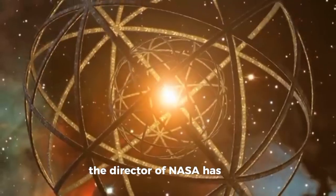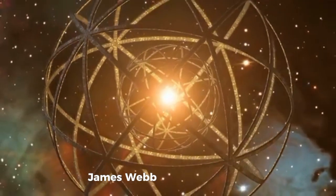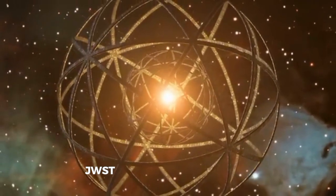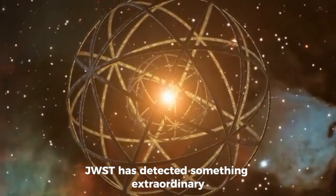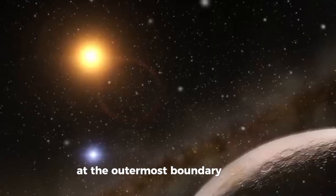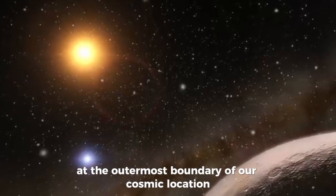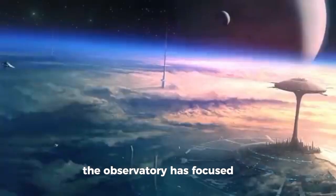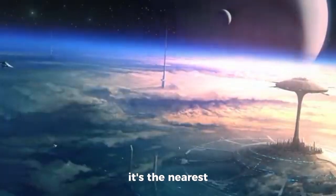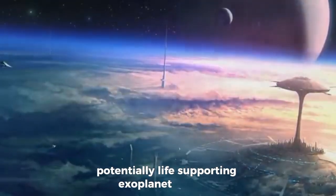The director of NASA has just disclosed that the James Webb Space Telescope JWST has detected something extraordinary at the outermost boundary of our cosmic location. The observatory has focused on Proxima b, the nearest potentially life-supporting exoplanet to Earth.